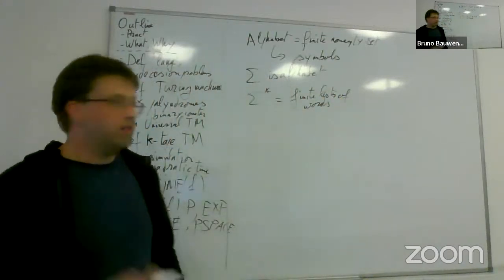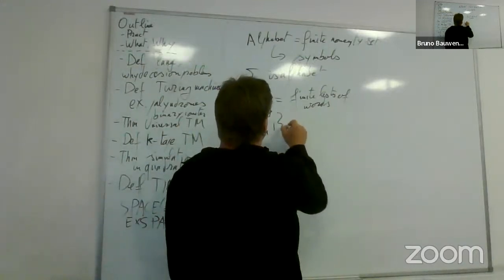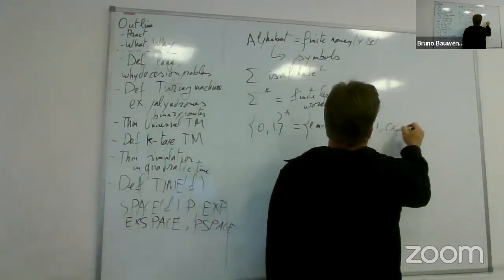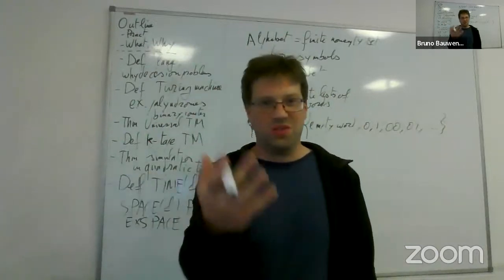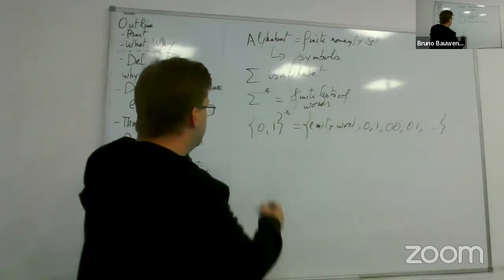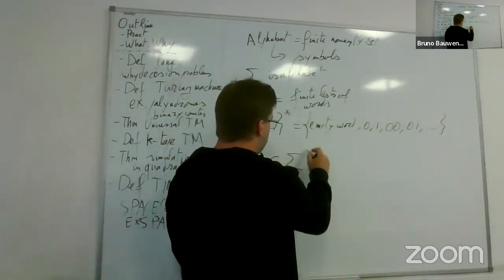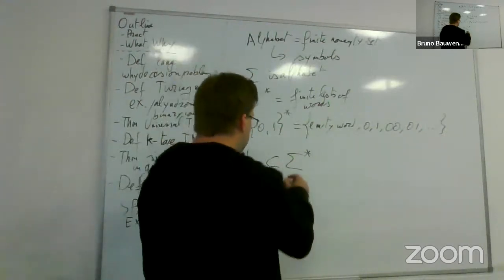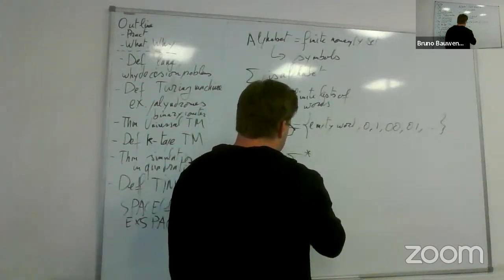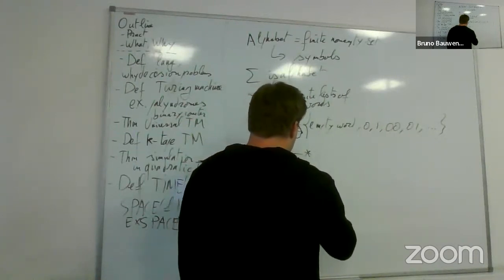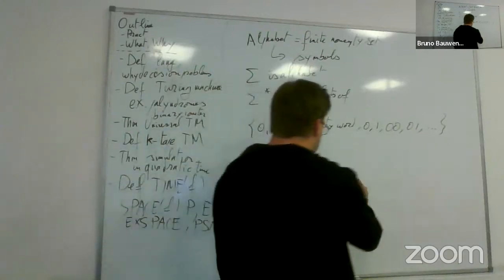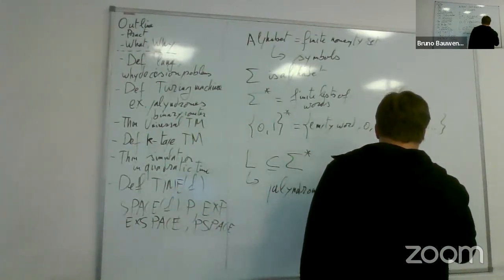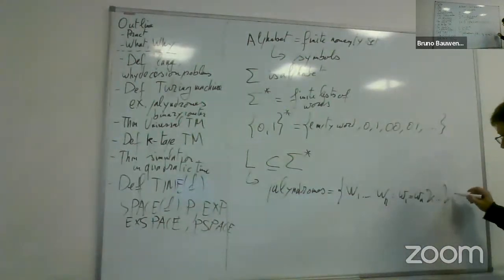An example of a language is palindromes. Binary palindromes is the set of words w such that w equals its reverse. For example, 0, 0, 1, 0, 0 and 1, 1 are palindromes, as well as even-length ones like 0, 0.